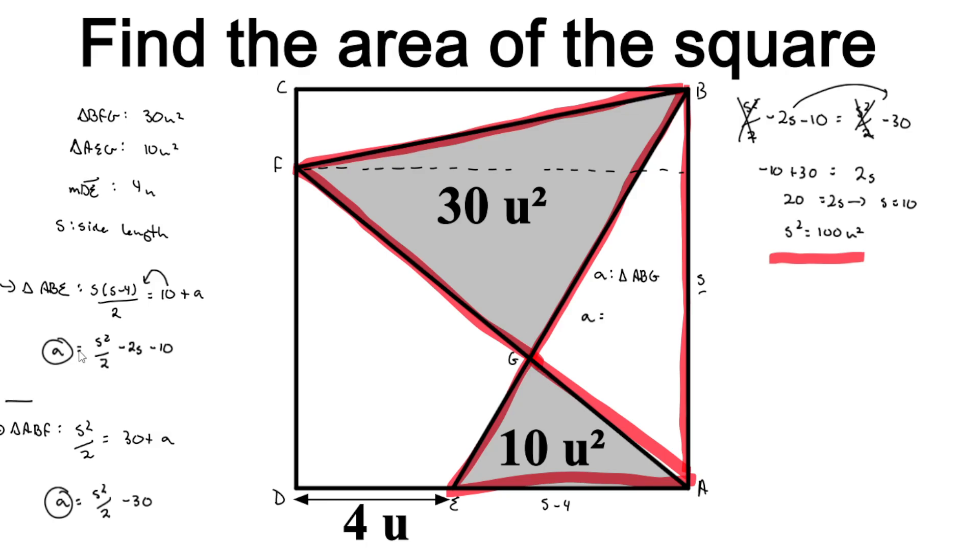The area of triangle ABG—we'll use this equation, it's simpler. So S squared divided by 2 minus 30 equals A. So 100 divided by 2 is 50, minus 30 equals 20. So that would be the area of ABG. And then we could find the areas of this part and this part to verify our answer.